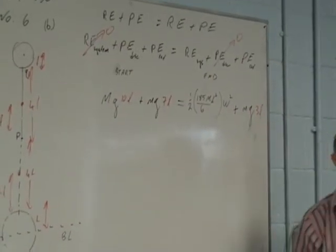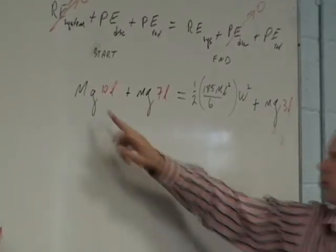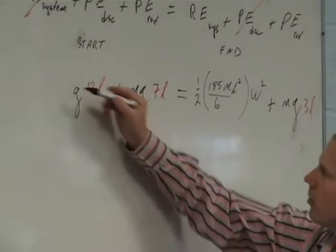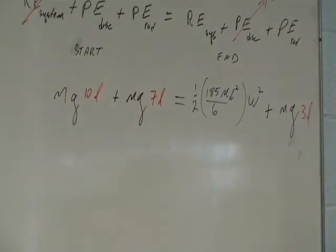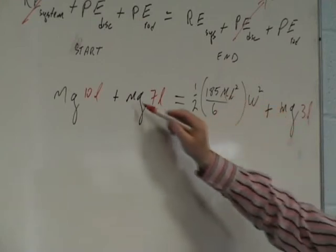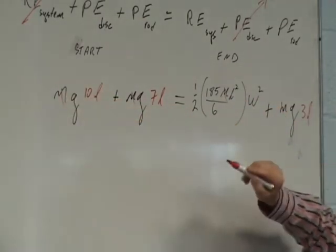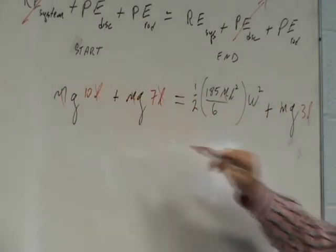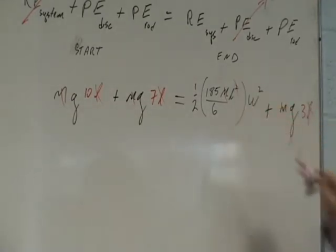And then I should make all my M's the same. So what can go? M. You can bring the M out. You can bring out the L, L, L and the square term.